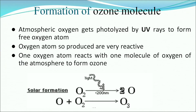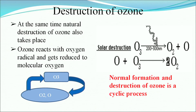Atmospheric oxygen gets photolyzed by UV rays to form free oxygen atoms. These reactive oxygen atoms then react with one molecule of atmospheric oxygen to form ozone. At the same time, natural destruction of ozone also takes place — ozone reacts with an oxygen radical and gets reduced to molecular oxygen. So the O₃ and O₂ cycles are continuously taking place in our atmosphere.